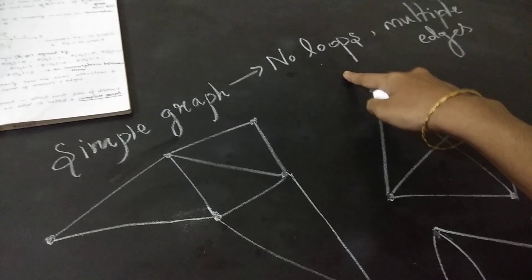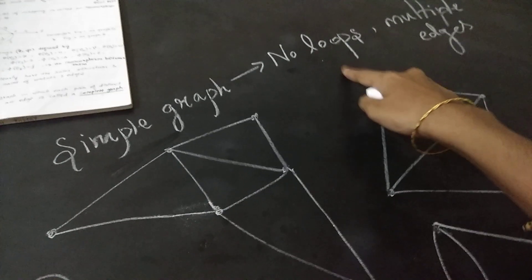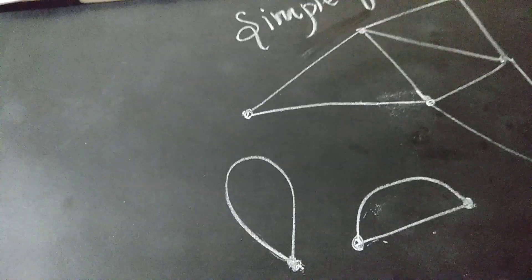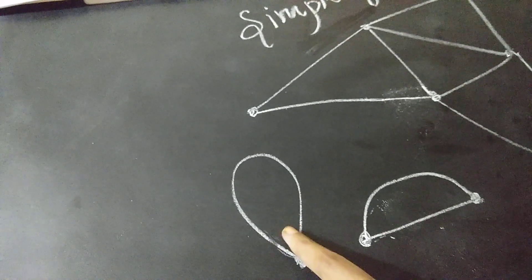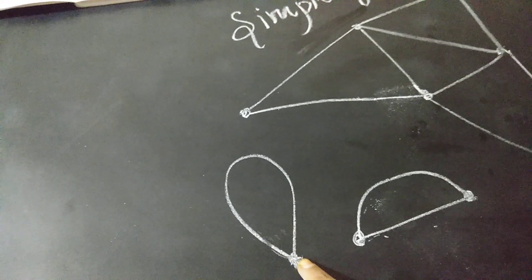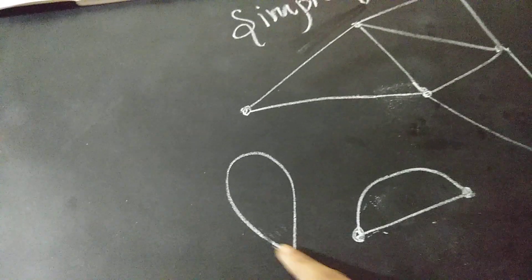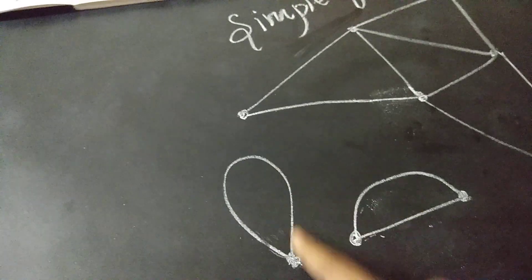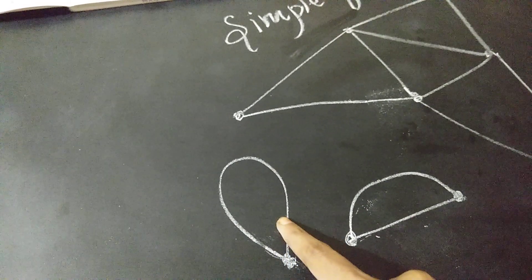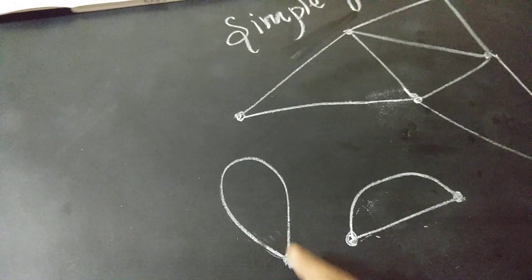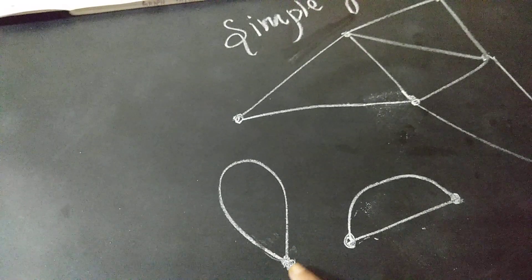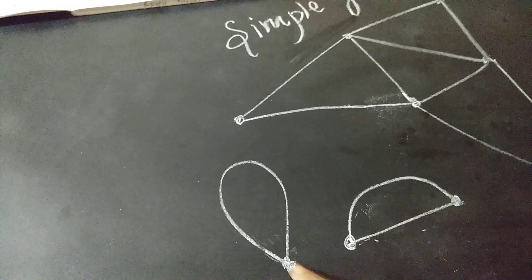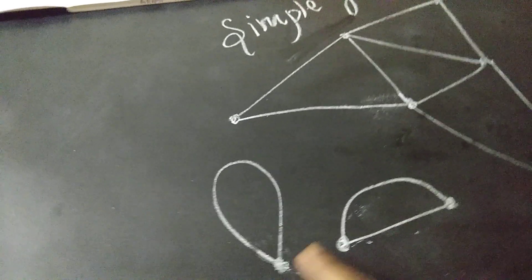You have to know what is called a loop. A loop means — look at this figure — this is a loop. The reason is because this is one vertex and this is an edge. This edge starts from this vertex and also ends at the same vertex. So it is called a loop.